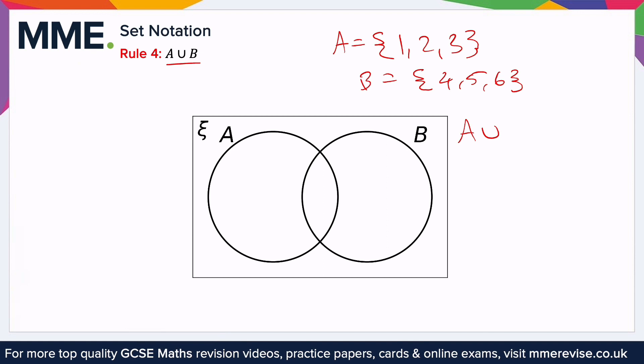So A union, which looks like a U, B is the set 1, 2, 3, 4, 5, 6. So how do we represent this on the Venn diagram? Well, it's just everything that is contained in both of the circles. So A union B means you just put the two sets together.